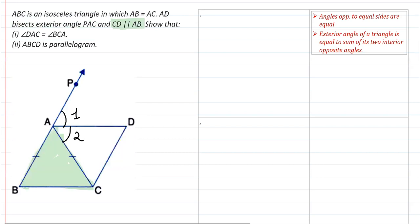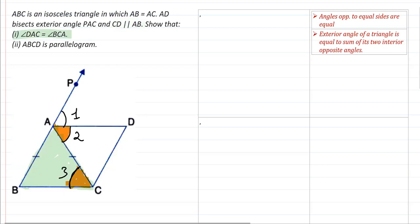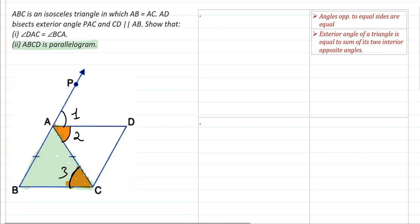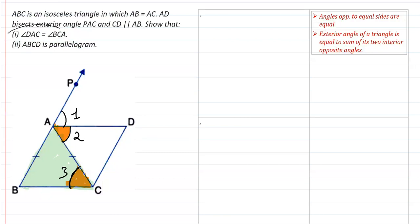In the first part, we have to prove that angle DAC equals angle BCA. Let's label angle DAC as angle 3 and angle BCA as angle 4, so we need to prove angle 3 equals angle 4. In the second part, we need to prove that ABCD is a parallelogram. For Part 1, we'll use two properties: angles opposite equal sides are equal, and the exterior angle of a triangle equals the sum of the two interior opposite angles.